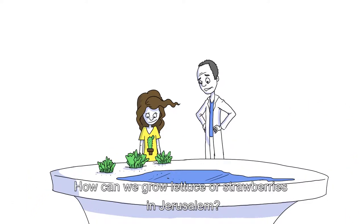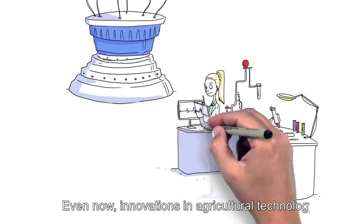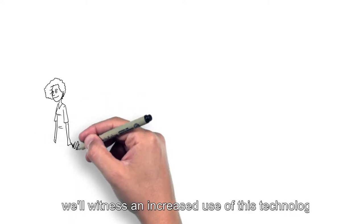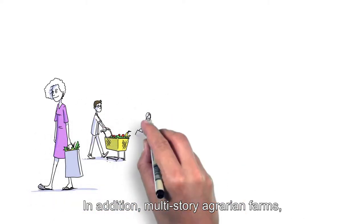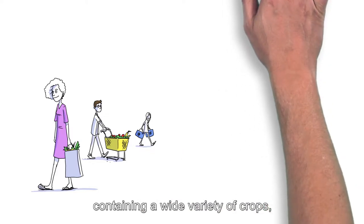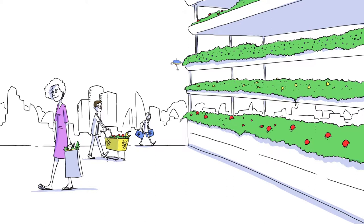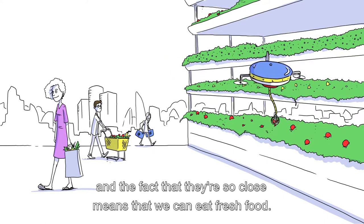How can we grow lettuce or strawberries in Jerusalem? Even now, innovations in agricultural technology enable us to grow fruits and vegetables without using soil. In the future, we'll witness an increased use of this technology. In addition, multi-story agrarian farms containing a wide variety of crops will pop up in the middle of our cities. These hydroponic farms don't contaminate the environment and the fact that they're so close means that we can eat fresh food.